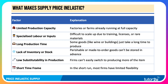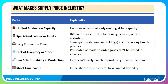Low substitutability in production means firms can't always easily switch to producing more of an item. And in the short run, most firms have limited flexibility in terms of their inputs. Indeed, in the short term we normally assume there's at least one fixed factor of production, and that can limit elasticity of supply.